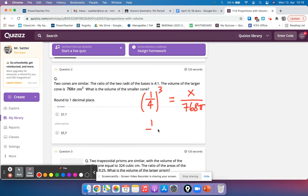I'm going to get one cubed is one. Four to the third power is 64. And now I can cross multiply.